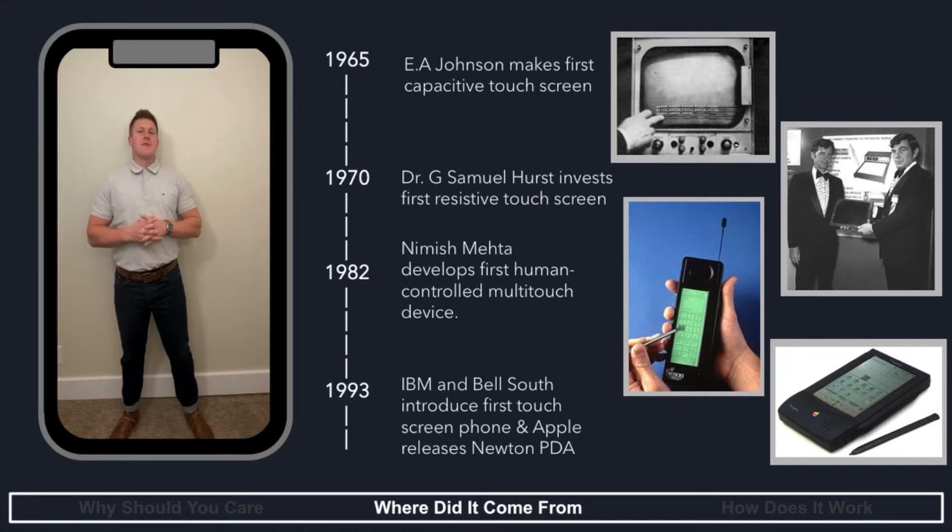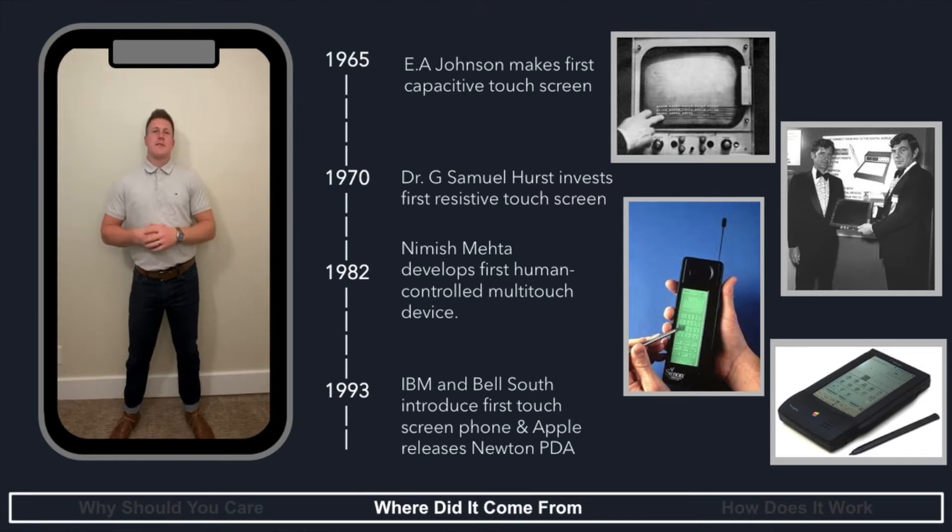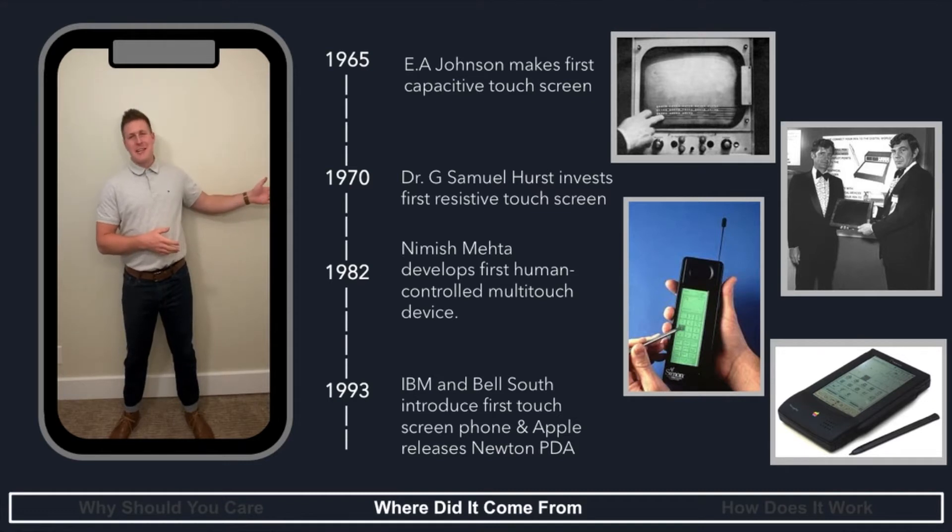Next, in 1982, we finally get touchscreen technology that can allow multiple touches to come on screen. Before this, you could only do one at a time. In 1993, we have touchscreen technology coming into daily devices. We can see this from IBM and Apple coming out with their devices, and we can see here IBM's phone is a little outdated now, but at least they were trying.